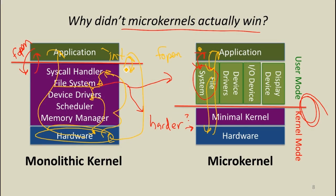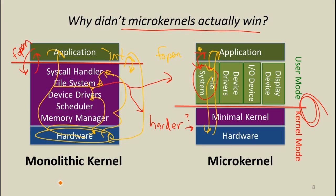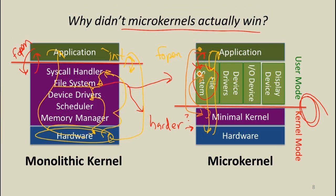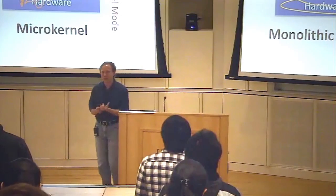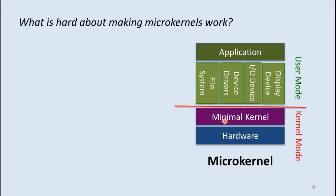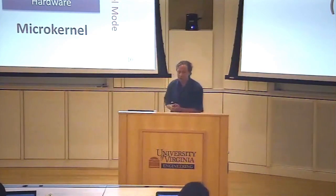In the microkernel design, you're going through these context switches lots and lots of times — it's probably close to a dozen context switches. So that's really expensive. What's expensive in a microkernel is all this inter-process communication, which with the way traditional kernels are designed is very expensive. This is why it seems like maybe there's a good reason microkernels did not win — it's going to be a lot more expensive to implement everything we want our OS to do if those things are outside the kernel, because of all these extra context switches.